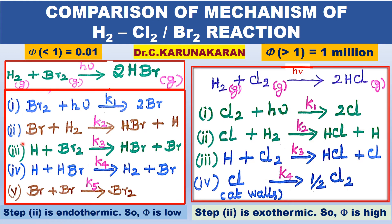However, step 2 in H₂+Br₂ is endothermic, whereas in the photochemical reaction between hydrogen and chlorine, step 2 is exothermic. So in the H₂+Cl₂ case, heat is released to activate further reactant molecules, whereas in H₂+Br₂, heat is absorbed, thereby deactivating the molecules. So because step 2 is exothermic in H₂+Cl₂, the quantum yield is very, very high.